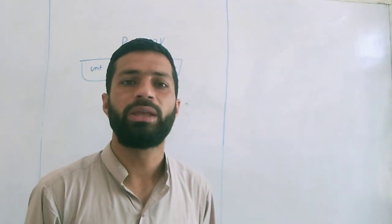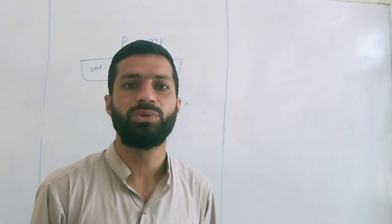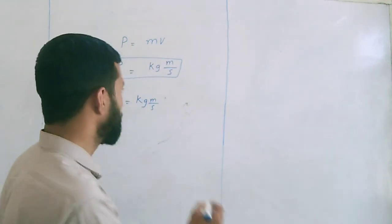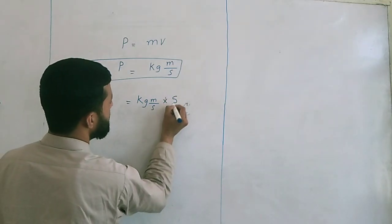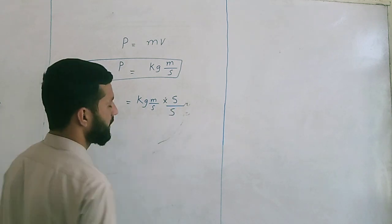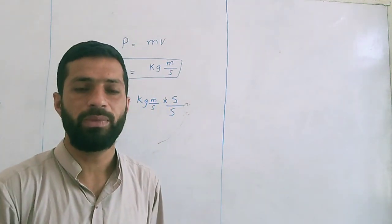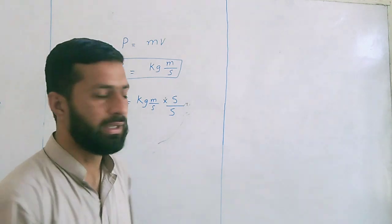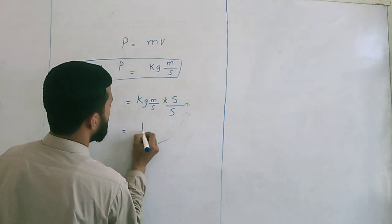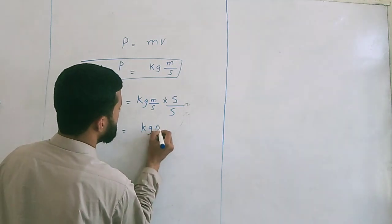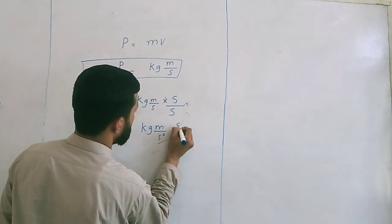And one is the multiplicative identity. We can multiply the equation by one. So, multiplying and dividing by second: it will become kilogram meter per second squared, multiplied by second.